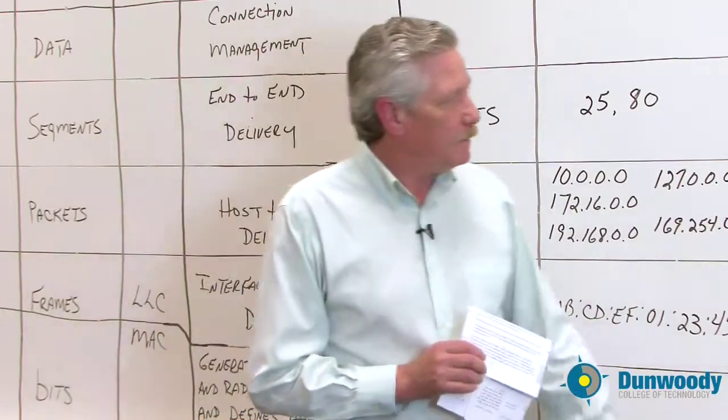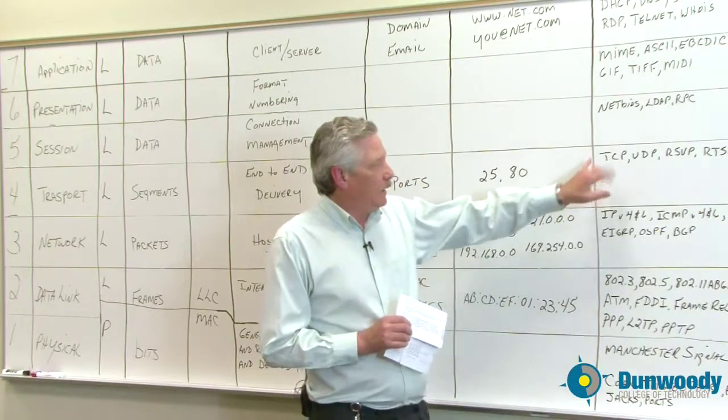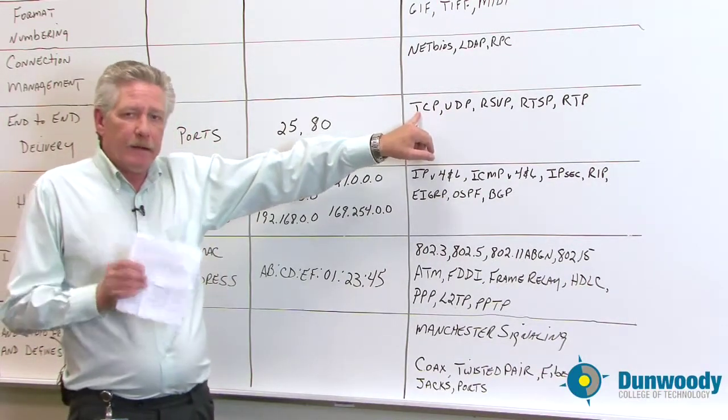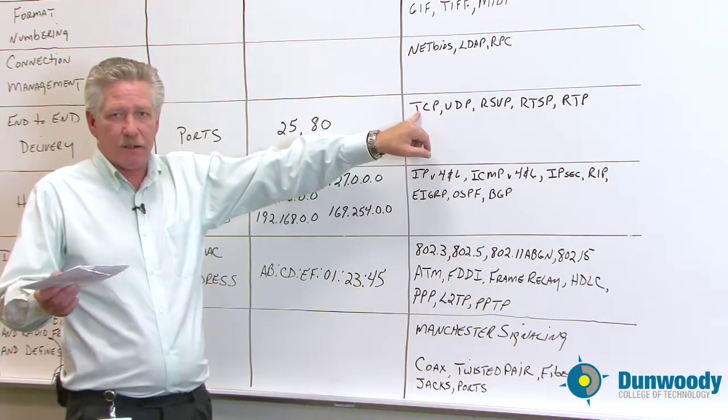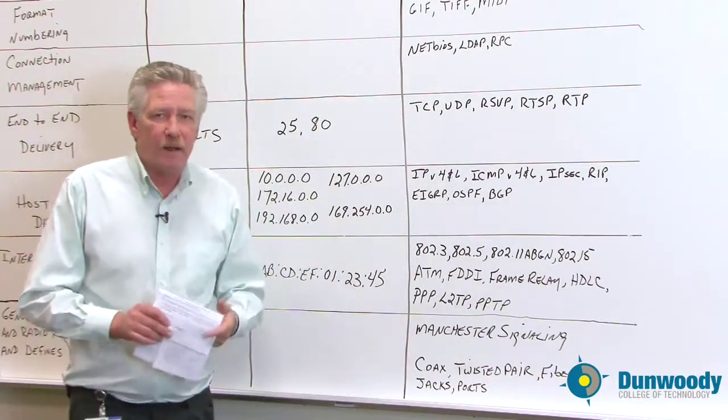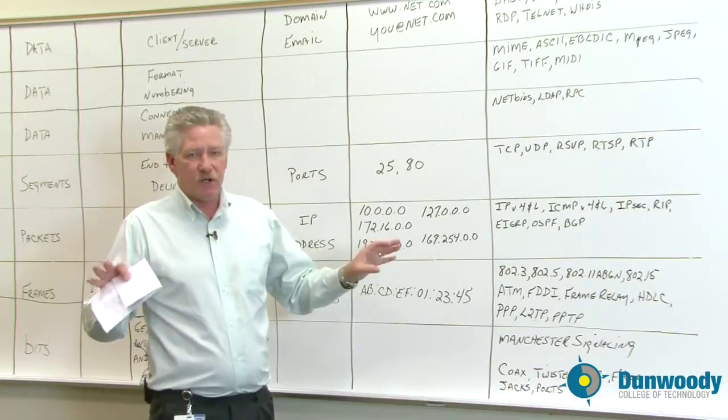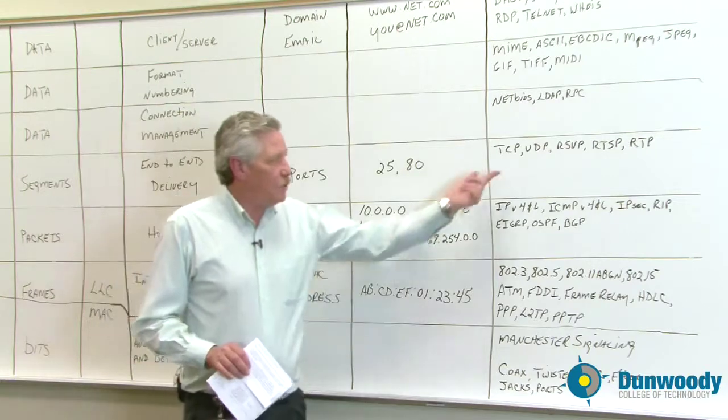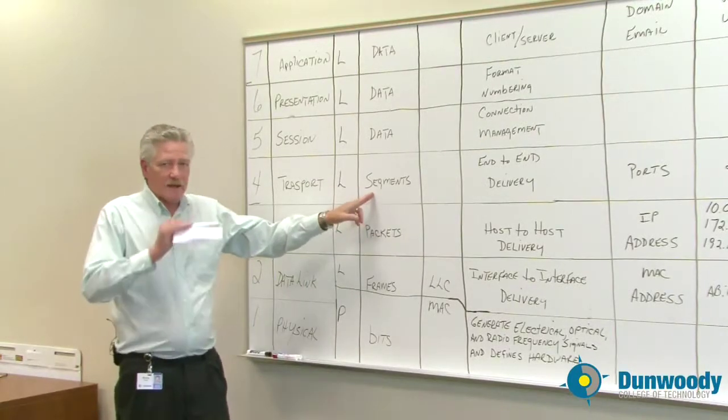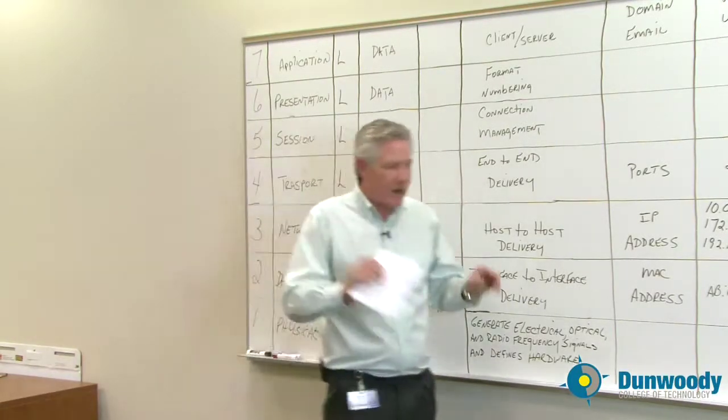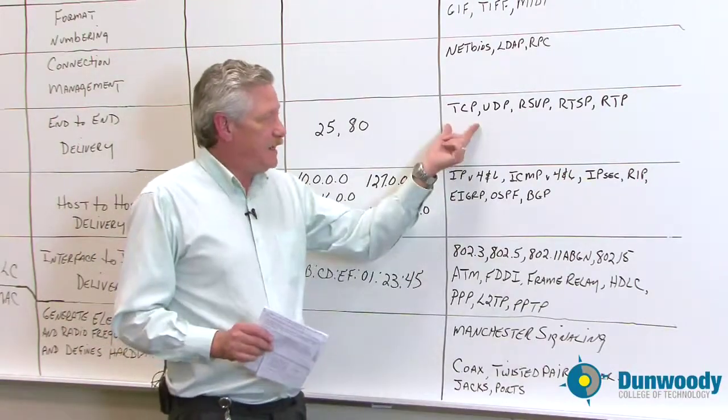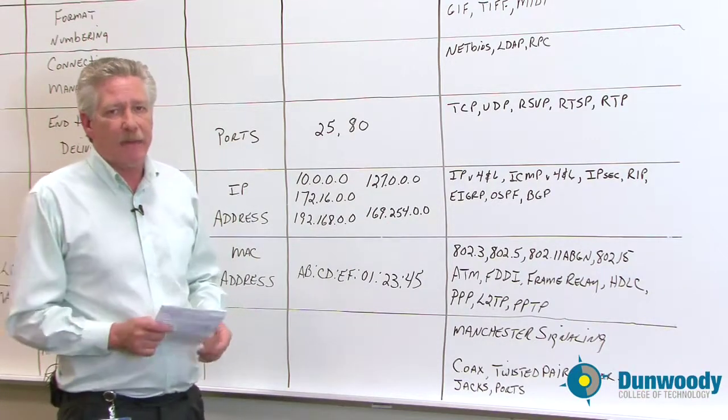And the two big protocols used on the transport layer are TCP and UDP. Transport control protocol is used for many web servers, especially, and other things. The nice thing about TCP is, one, it creates a virtual circuit between the machines. And two, remember I said that back here, I said that it numbers the packets. Well, as the packets come in to your laptop, and let's say one of them's damaged or just doesn't get there, TCP can ask the other machine to resend the packet.